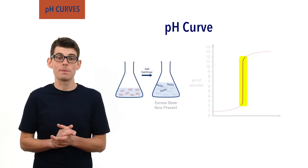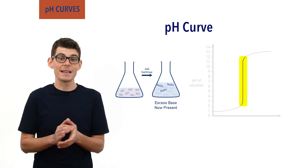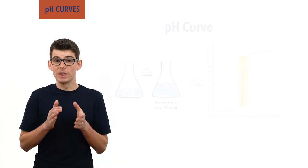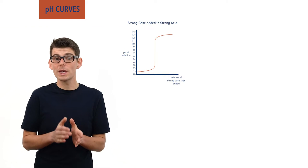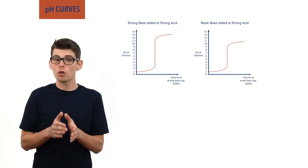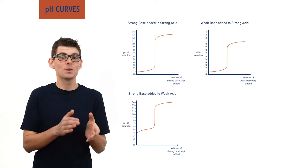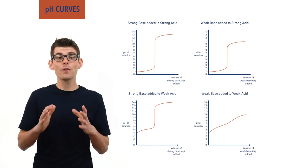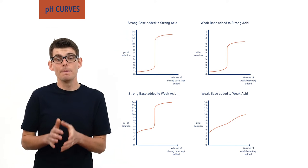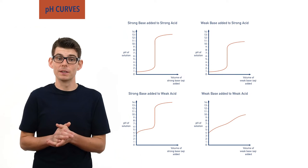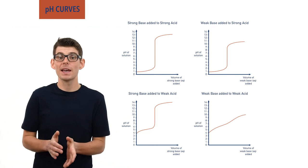There are four main shapes of pH curves for titrations that you should be comfortable with and able to recognize: the addition of a strong base to a strong acid, the addition of a weak base to a strong acid, the addition of a strong base to a weak acid, and the addition of a weak base to a weak acid. In all four of these scenarios, we are adding base to an acid, meaning the solution will change from being acidic, pH below 7, and end alkaline, pH over 7.